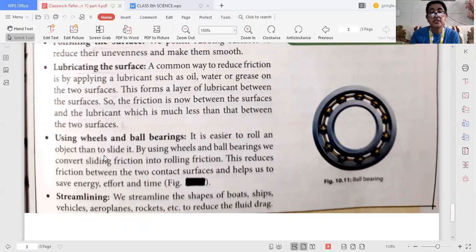Now streamlining. Just now we have seen the shape of the boats, ships, vehicles, airplanes, rockets—they always reduce the fluid drag. So this is how we can reduce friction.